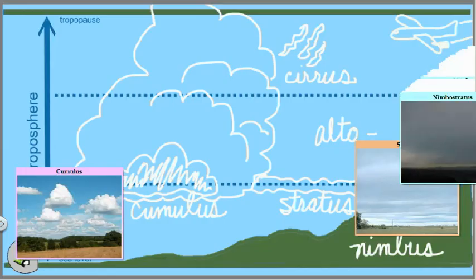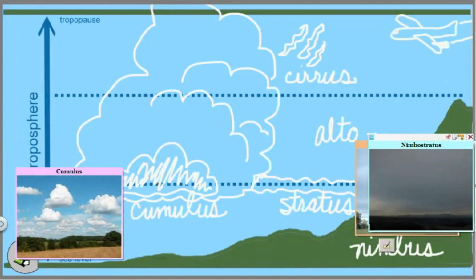If we have dark version of those, like this photograph shows, we would have nimbostratus clouds, so dark stratus clouds. These are when you would probably have rainy weather.